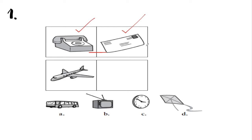Both the telephone and the letter are used as methods of communication — their relation is that they have the same purpose. So that means we should find a picture which has the same purpose as an airplane. The purpose of an airplane is transportation. So which one is the correct answer — a bus, a television, a clock, or a kite? The correct answer is letter A, the bus. Bus and airplanes are both used as methods of transportation. So for number one, the correct answer is letter A.